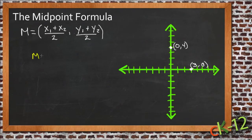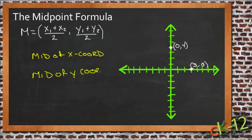And then it also tells you what the middle of the y coordinates is. And that's where this x₁ plus x₂ over 2 and y₁ plus y₂ over 2 comes from.